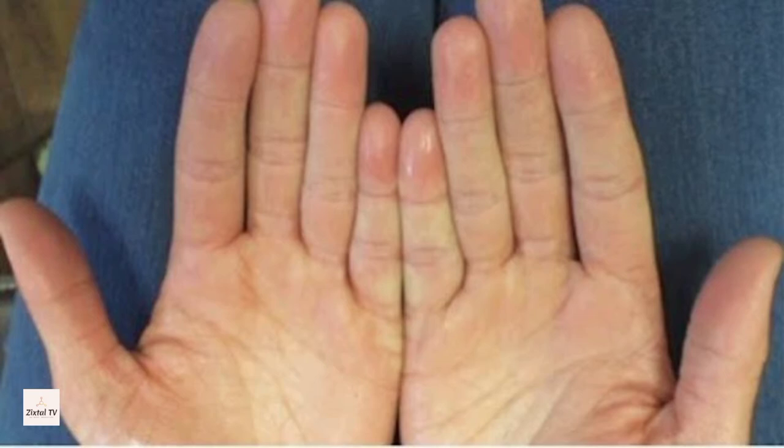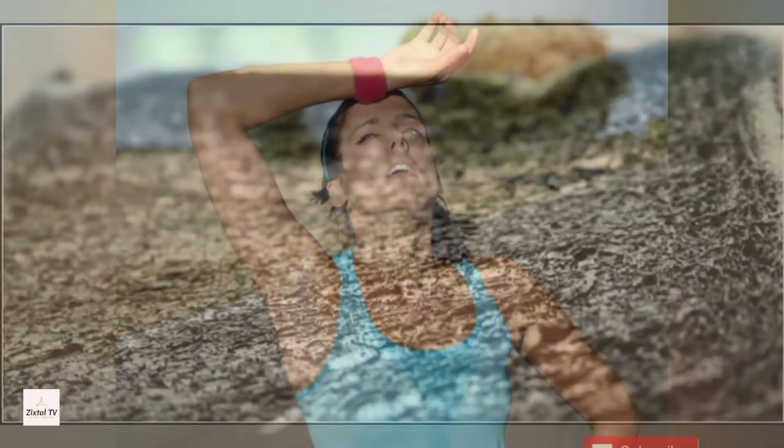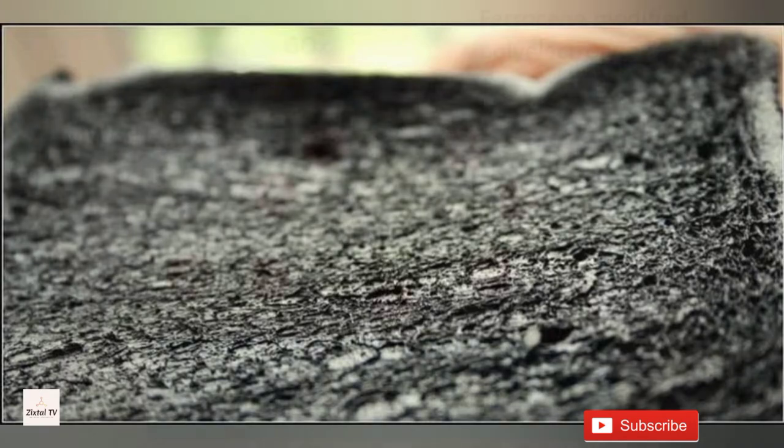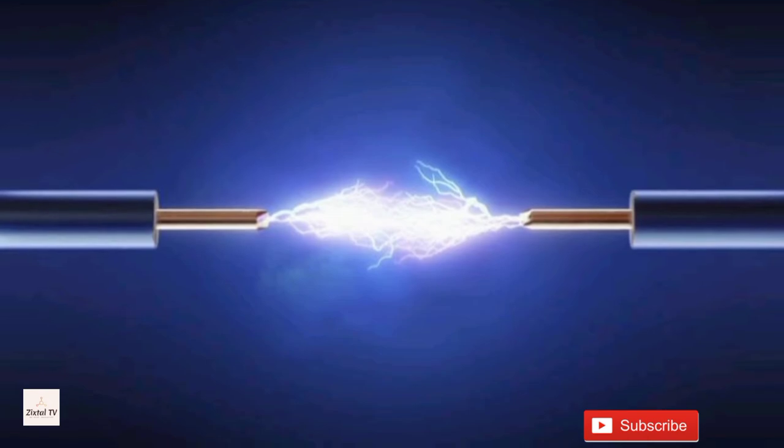So instead of allowing all the energy to go to waste, sweat is absorbed by carbon foam and enzyme-coated electrodes trigger a chemical reaction that produces electricity. This device can generate 300 millijoules of energy per square centimeter.